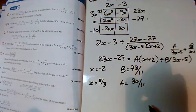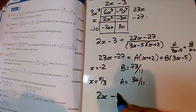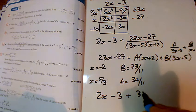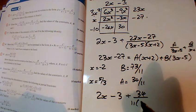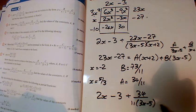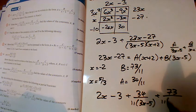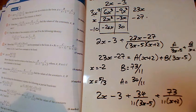It feels wrong, but I've checked it several times and it's right. The answer is 2x - 3 + (34/11)/(3x - 5) + (73/11)/(x + 2).